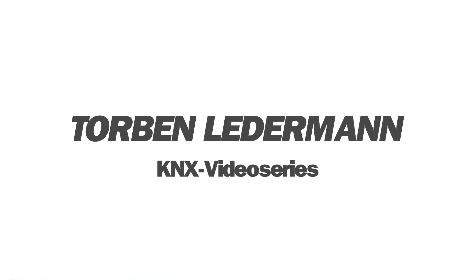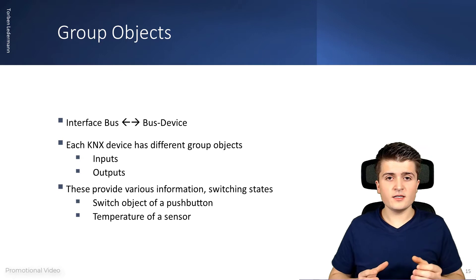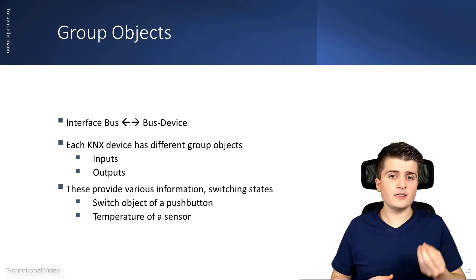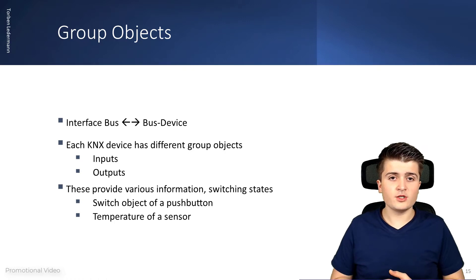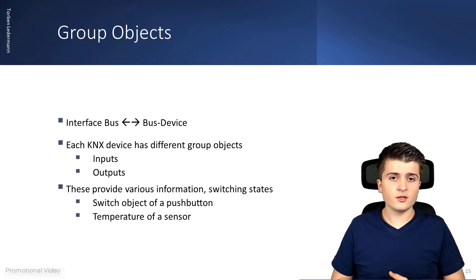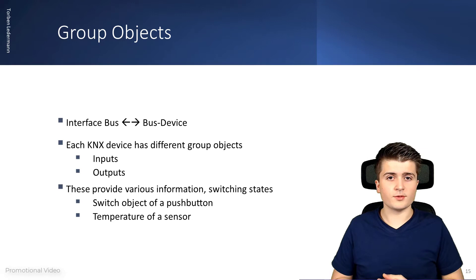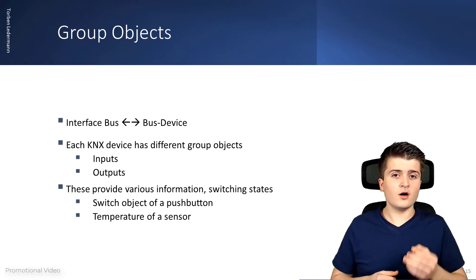How we can achieve this we will see after the intro. Group objects are the interface between the bus and the bus device. All information provided by a KNX device is represented as a group object in the EDS. So this means, for example, in the case of a sensor, the information of pressing the button, the temperature, or the humidity is represented as a group object. And in the case of an actuator, the individual channel functions — such as switching, blind movement, or dimming — are represented as a group object.